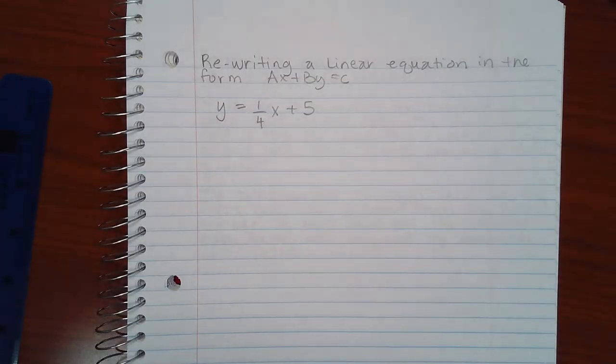Before we can get it in standard form, there's something we need to know about a, b, and c. a, b, and c cannot be decimal numbers, and they cannot be fractions. They must be whole integers. They can be positive or negative, but they have to be integers.